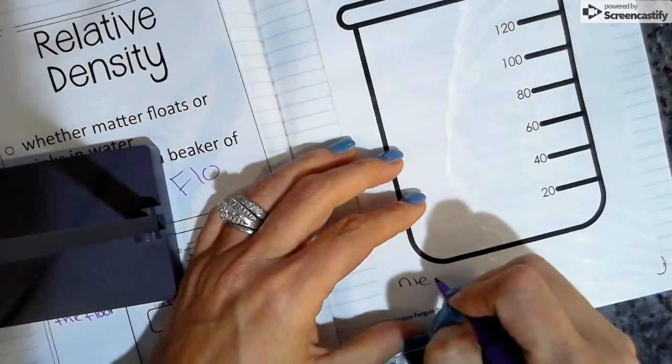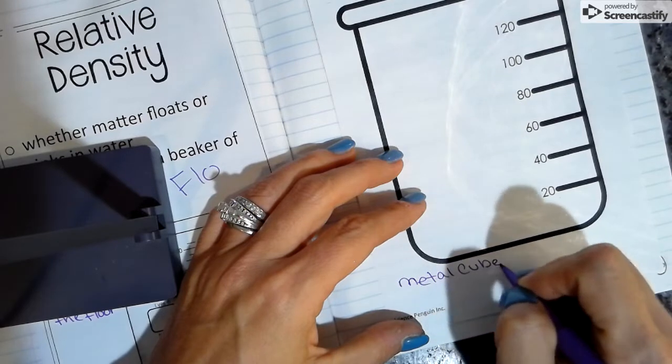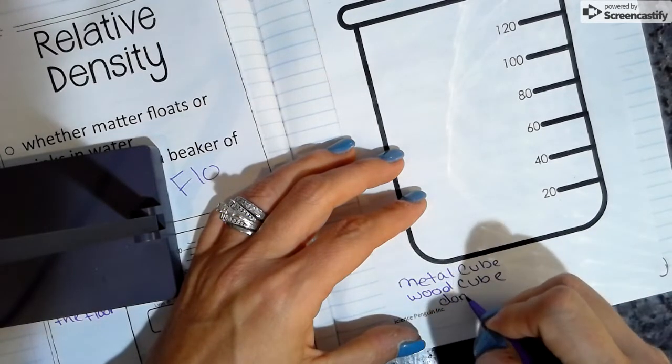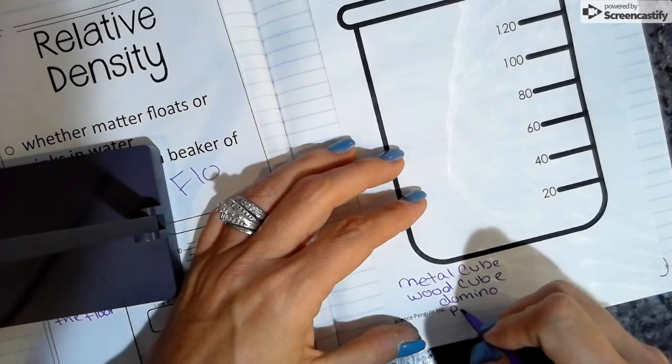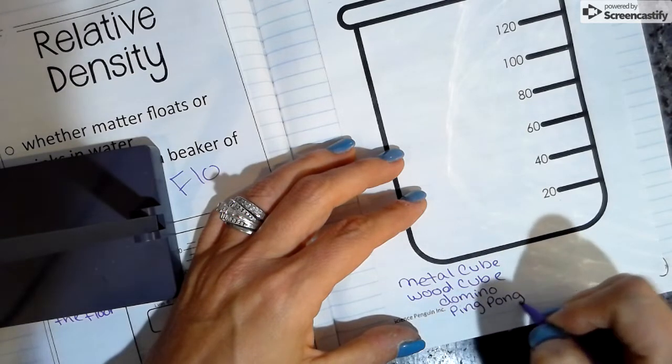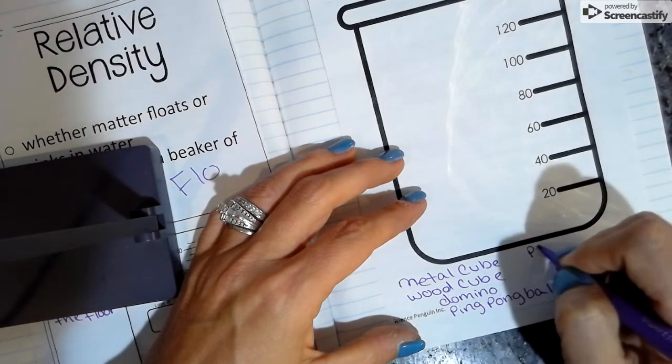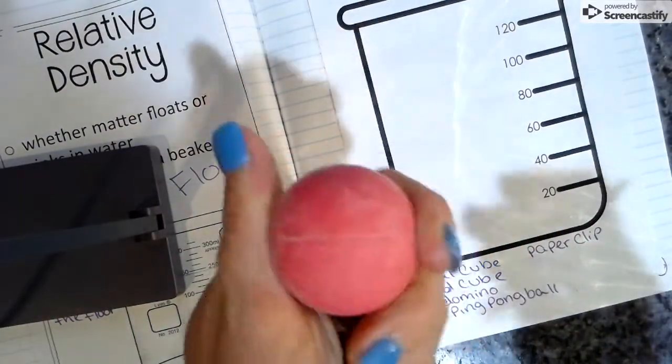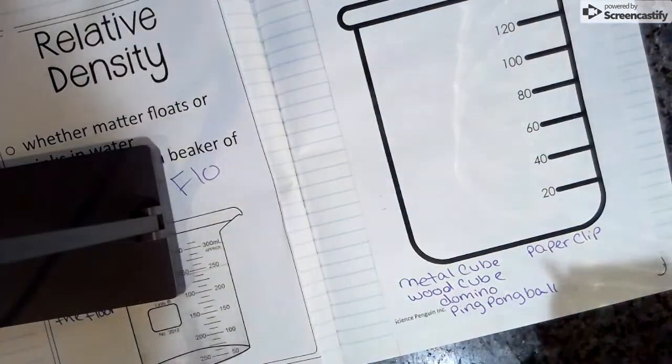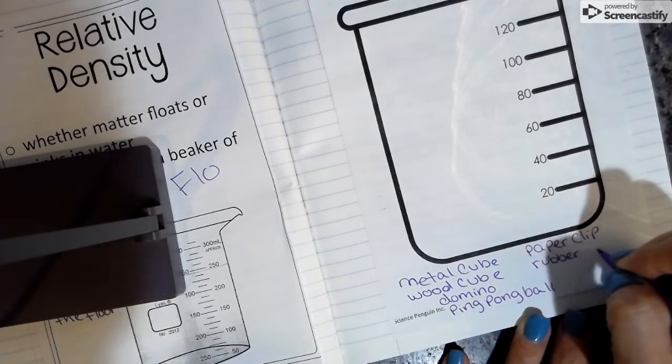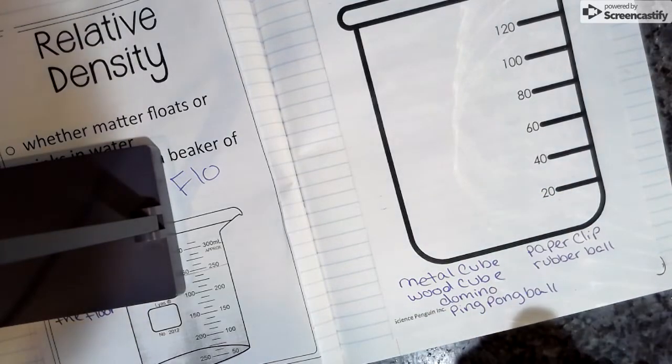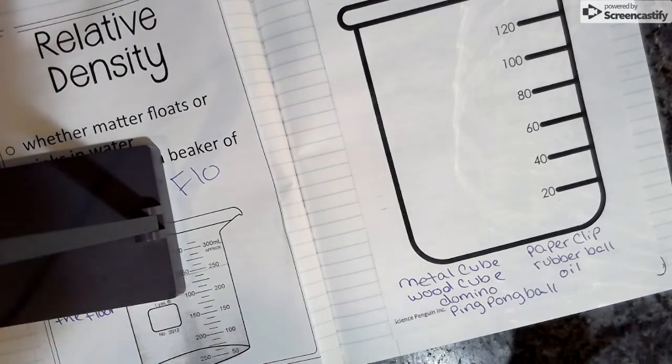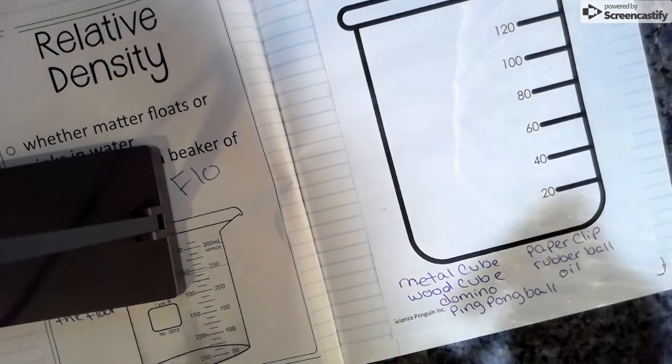So, we can do metal cube, wood cube, domino, a ping pong ball, a paperclip, and last, I don't think I showed you this, a rubber ball, this is a rubber bouncy ball, and oil. We're going to do oil last, because I don't really want the oil necessarily to get all over the objects, because it's hard to clean off. All right, so let's do this, shall we?